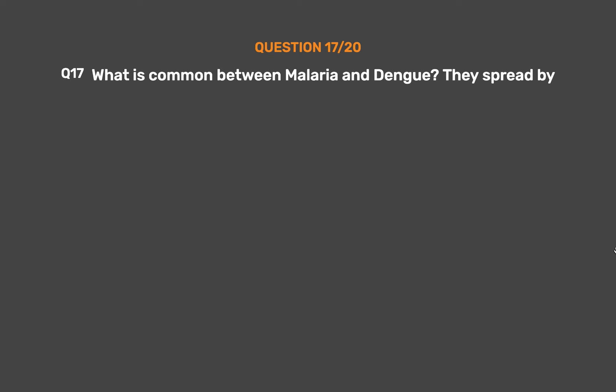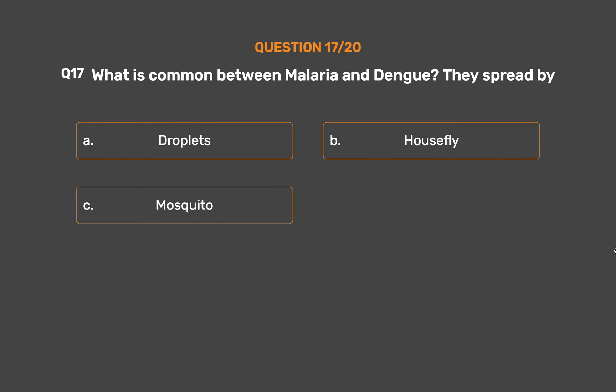Question number 17. What is common between malaria and dengue? They spread by: Option A: Droplets. Option B: Housefly. Option C: Mosquito. Option D: Sexual contact.